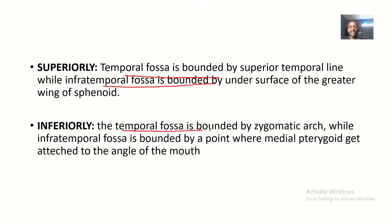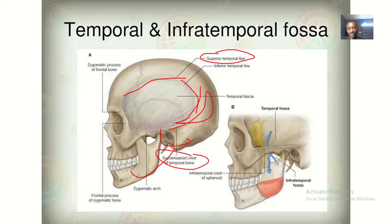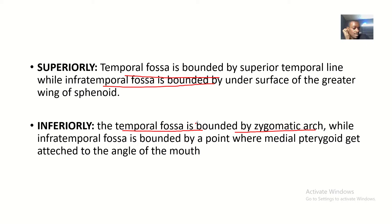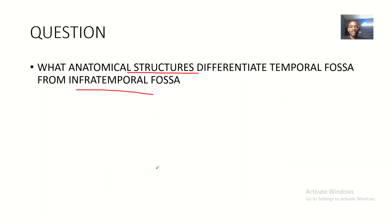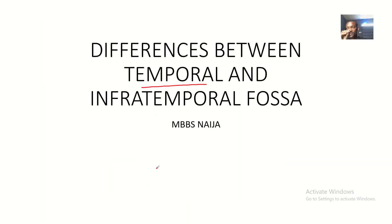Inferiorly, the temporal fossa is bounded by the zygomatic arch — since it lies above it. The infratemporal fossa is bounded inferiorly by the point where the medial pterygoid muscle attaches to the angle of the mouth, forming the inferior boundary of the infratemporal fossa.